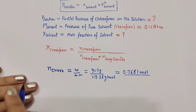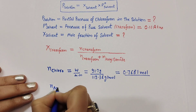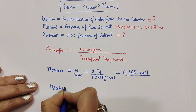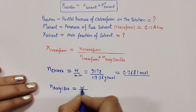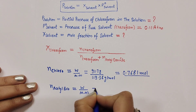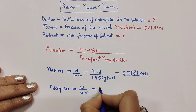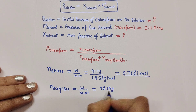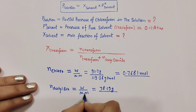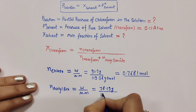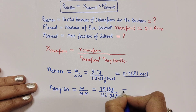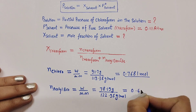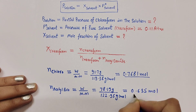Now we need the number of moles of acetyl bromide. Using the same formula: given mass of acetyl bromide is 78.19 grams, divided by the molar mass of acetyl bromide which is 122.95 grams per mole. This comes out to be 0.635 moles of acetyl bromide.